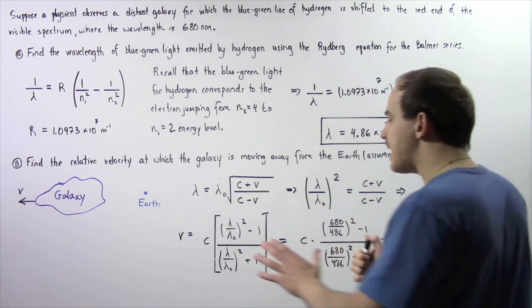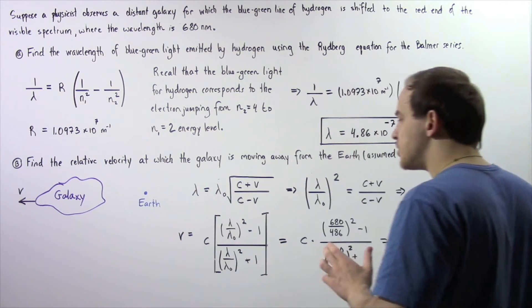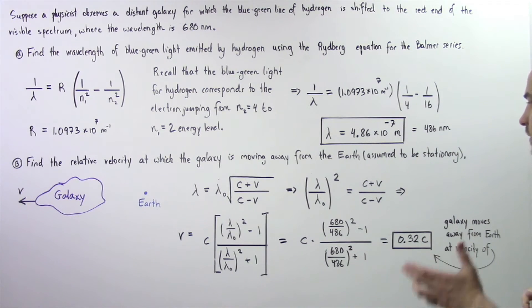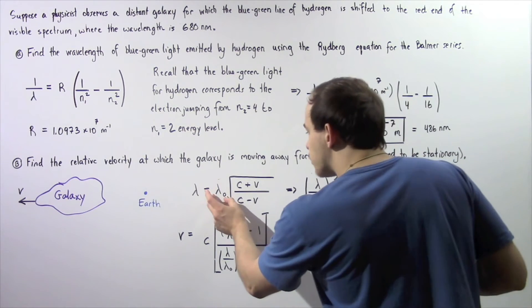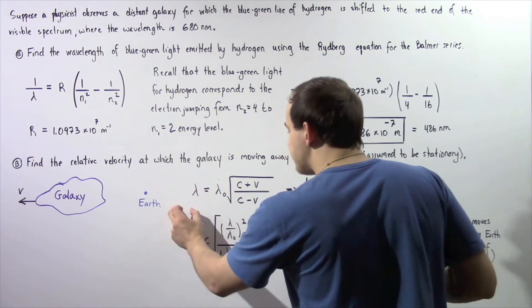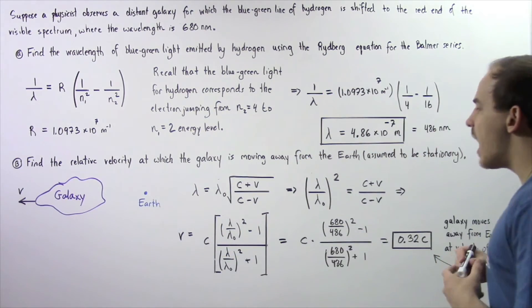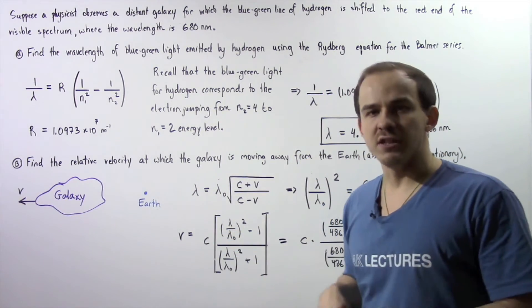The first step is to take this equation, rearrange it, and solve for the velocity. We bring this λ₀ to the left side, we square both sides, and then we solve for the velocity. The velocity is equal to C multiplied by this divided by this.